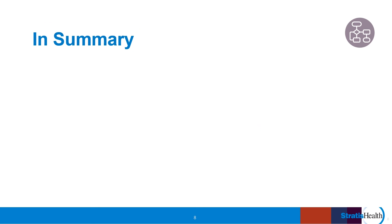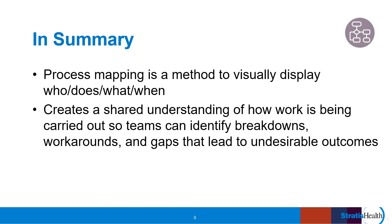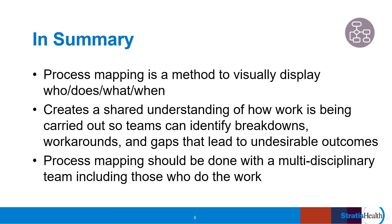In summary, process mapping is a method to visually display how work is done, answering who does what when. It creates a shared understanding of how work is actually being carried out so that teams can identify breakdowns, workarounds, and gaps in processes that result in undesirable outcomes. Process mapping is a team activity and must include people who do the work being analyzed.